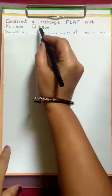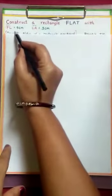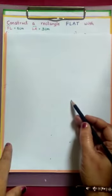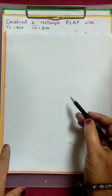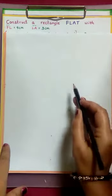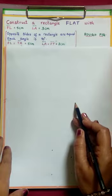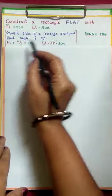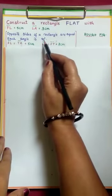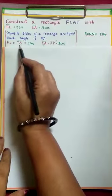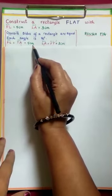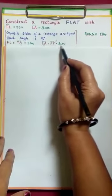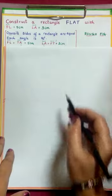Construct a rectangle FLAT with FL = 5 cm, LA = 3 cm. How many measurements are given? Only 2. We need 5, so 3 are missing. Now, what are the properties of a rectangle? Opposite sides of a rectangle are equal, and each angle is 90 degrees. So FL opposite side is TA — both lengths equal to 5 cm. LA opposite side is FT — both lengths equal to 3 cm.